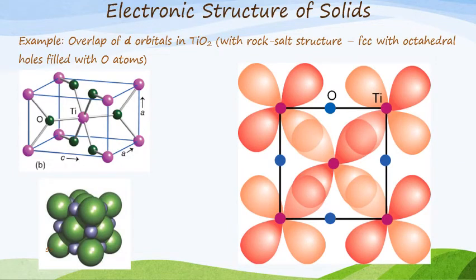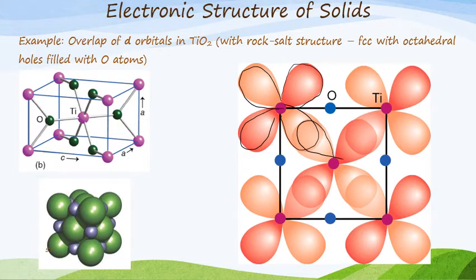In some instances we also get overlap of d orbitals. With titanium dioxide, which has a rock salt structure, you can see these are the d orbitals. I told you right back at the beginning when we did atomic theory that you were to know the shapes of the d orbitals. You can see the d orbital here — and these are for titanium atoms, the purple atoms. You can see here is where the overlap takes place. I'm not going to go into too much more detail about d orbital overlap, but this is how the d orbitals overlap in this particular structure.